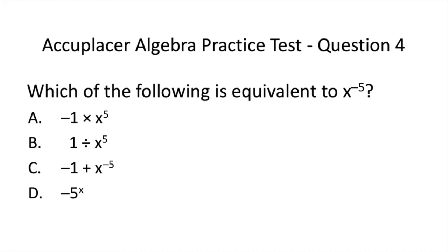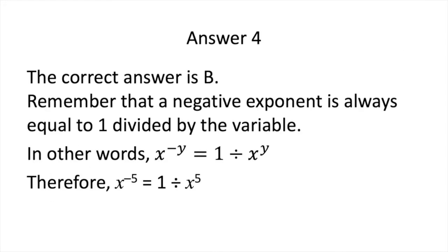Here is the ACCUPLACER Algebra Practice Test Question 4. Now pause to solve. The correct answer is B. Remember that a negative exponent is always equal to 1 divided by the variable. In other words, X to the power of negative Y is equal to 1 divided by X to the power of Y.